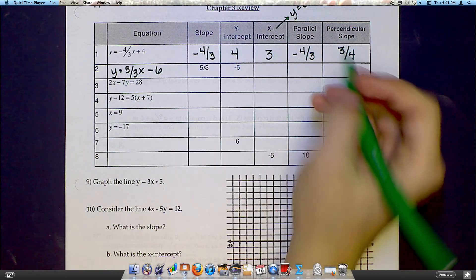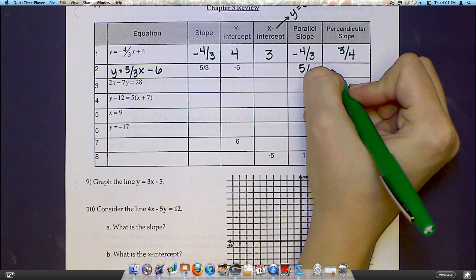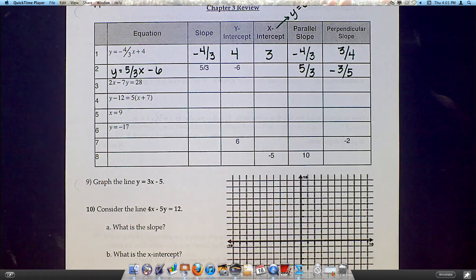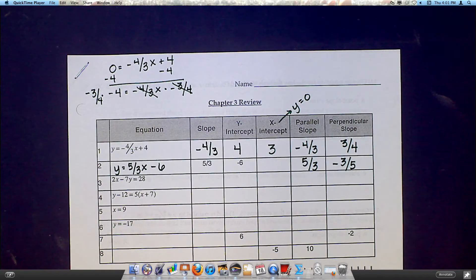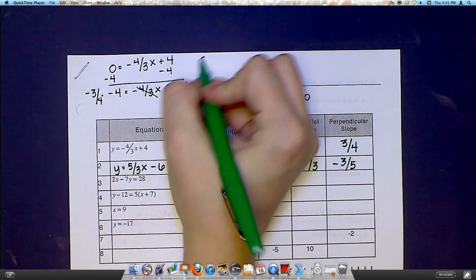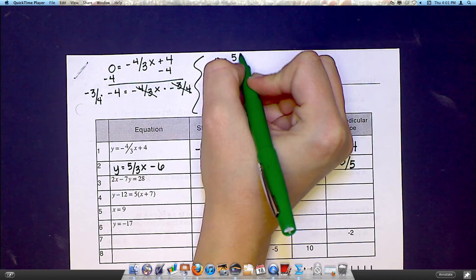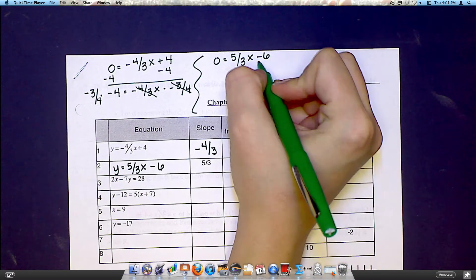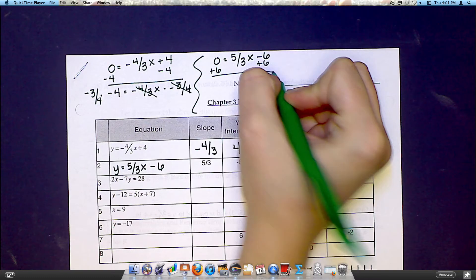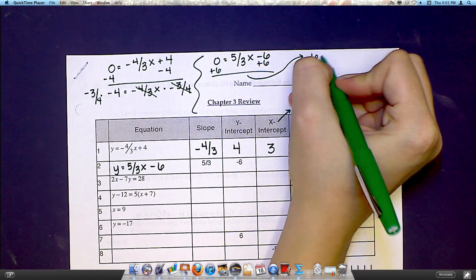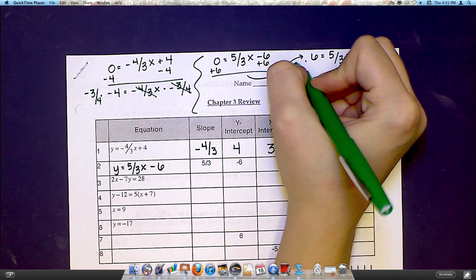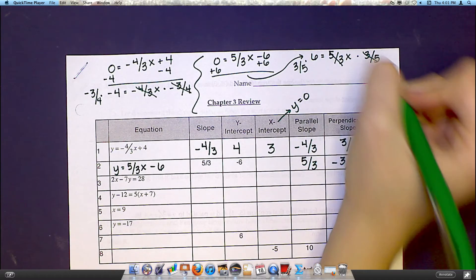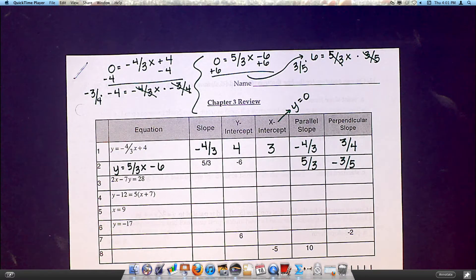Again, from the slope, I can get the parallel slope very easily, and the perpendicular slope by flipping it over and making it negative. But my x-intercept, I'm going to have to do a little work for. For my x-intercept, I'm going to put a 0 for y. So I would say 0 equals 5 thirds x minus 6. I would add the 6 on both sides, so I would end up with 6 equals 5 thirds x, and then multiply by the reciprocal, which is 3 over 5. When I do that, that'll give me 18 over 5, which I believe is 3.6.